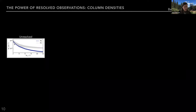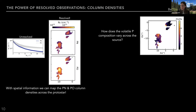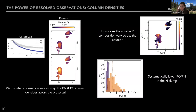Another asset of spatially resolved observations is getting really good constraints on column densities. With the ALMA emission resolved, we can look at column density maps of PN and PO across the protostar and understand how the volatile composition of phosphorus varies across the source. This is reflected by the PO-to-PN ratio. We can now make maps of this volatile phosphorus composition, and we see it spans from about 1 to 8. There seems to be a systematically lower PO-to-PN ratio in the northern emission clump — a lower and narrower distribution compared to the southern clump.